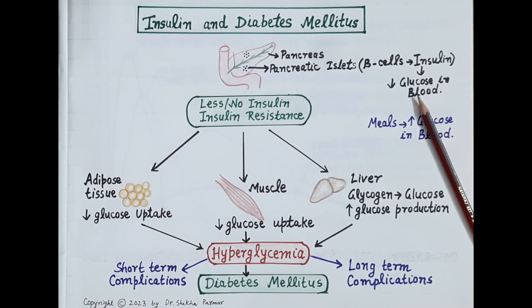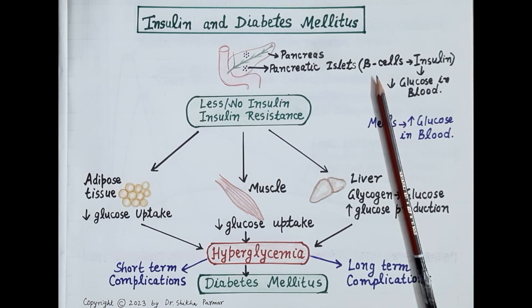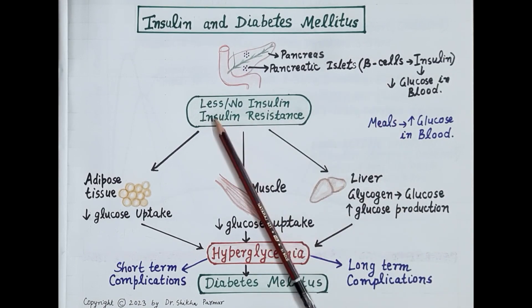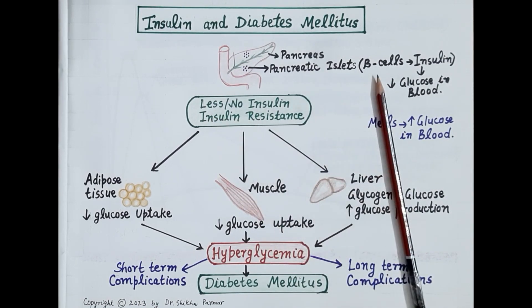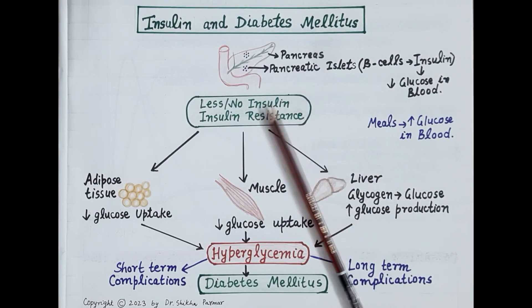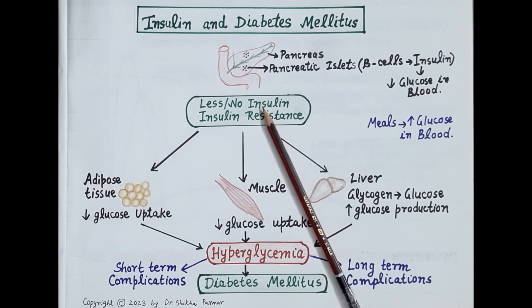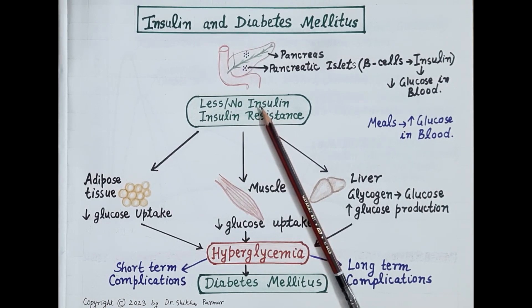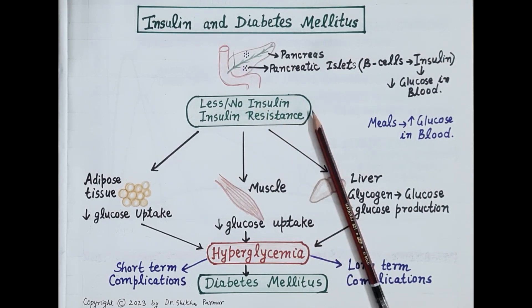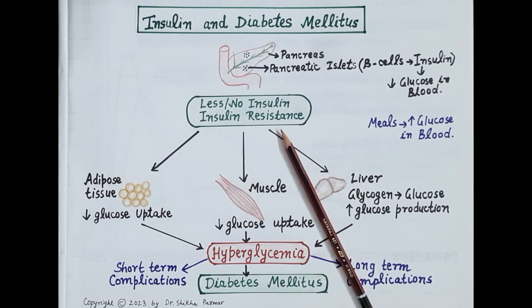Now in some instances functioning of beta cells reduces, so less insulin is produced. But if beta cells are completely destroyed, no insulin is produced. In addition to this, certain risk factors like obesity, physical inactivity, and stress can cause insulin resistance.